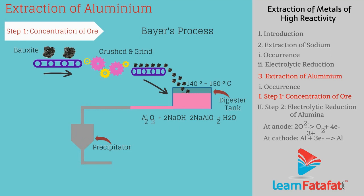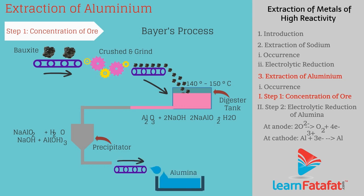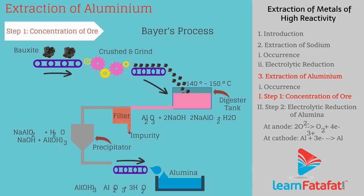Sodium aluminate is then mixed with water and cooled to 50°C, giving aluminium hydroxide as a precipitate: NaAlO₂ + H₂O → NaOH + Al(OH)₃. This precipitate is filtered, washed, dried, and heated at 1000°C to get alumina: Al(OH)₃ → Al₂O₃ + 3H₂O. From the digester, iron oxide impurity is removed by filtration as it does not dissolve in aqueous sodium hydroxide. However, silica dissolves in sodium hydroxide and forms water-soluble sodium silicate.